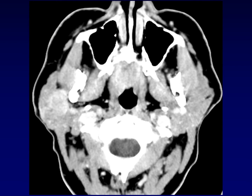Here's an example of a low grade mucoepidermoid carcinoma. The border is well circumscribed. It's uniformly enhancing — a well defined tumor. There is nothing about this tumor that would allow you to distinguish it from a pleomorphic adenoma on radiology.